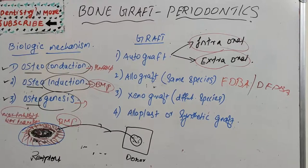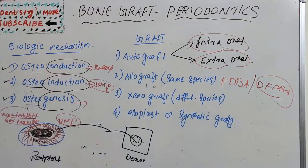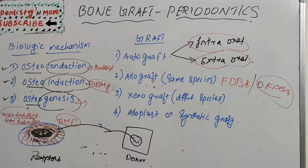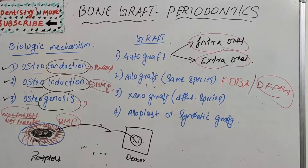The only materials with histological evidence to substantiate regenerative use are autogenous bone graft and DFDBA. It is also important to understand the screening protocol of the tissue bank, including donor selection, processing technique, and particle size.